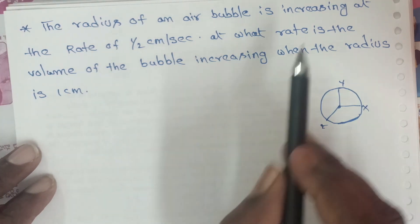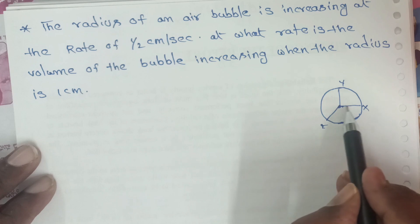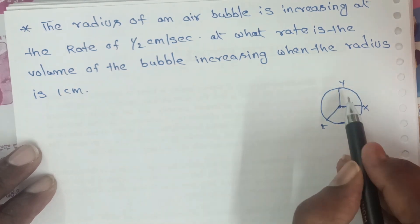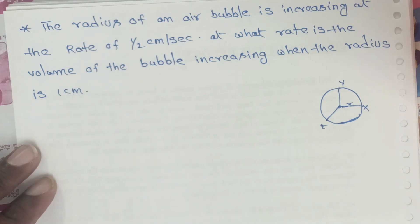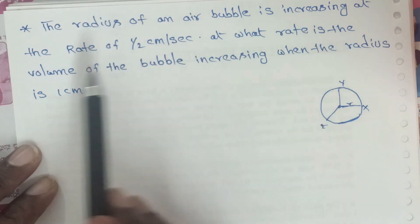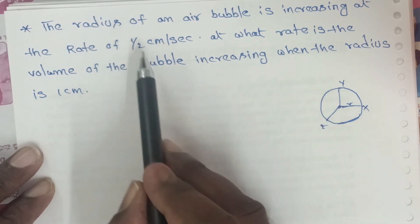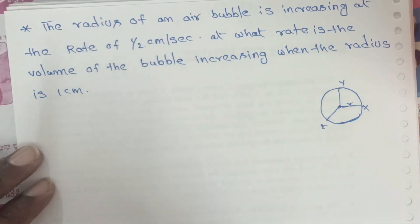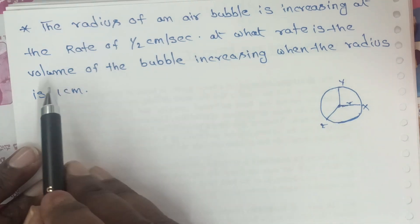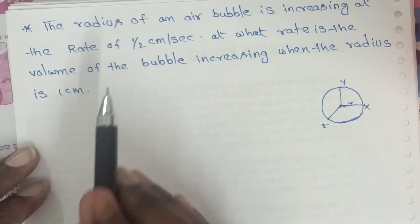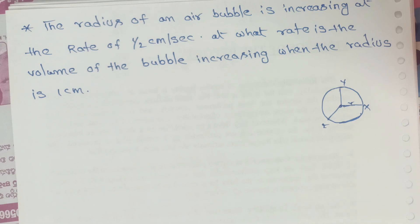The radius of the air bubble is 1 cm, and the increasing rate of the radius is 1/2, that means 0.5 cm per second. We need to find the rate at which the volume is increasing.